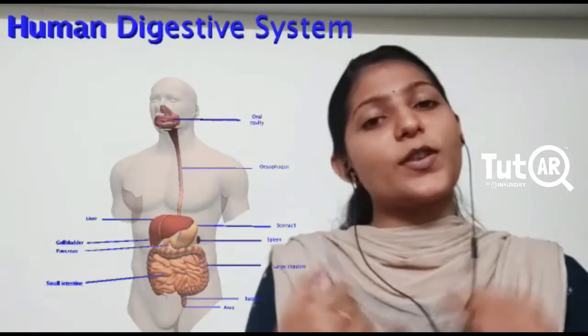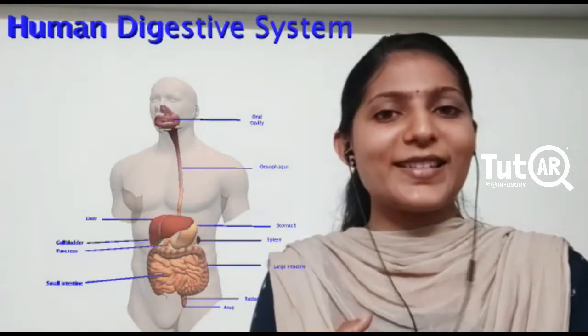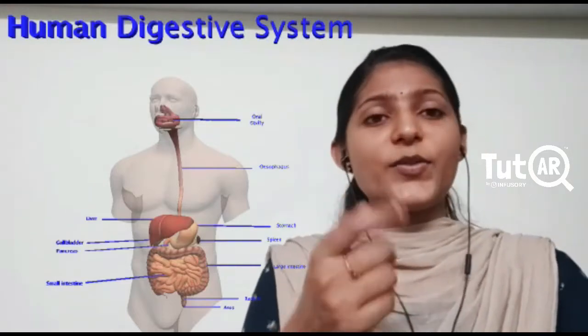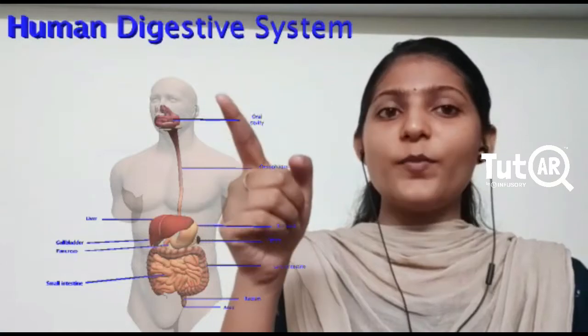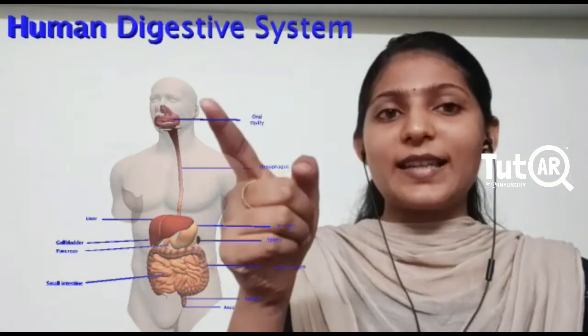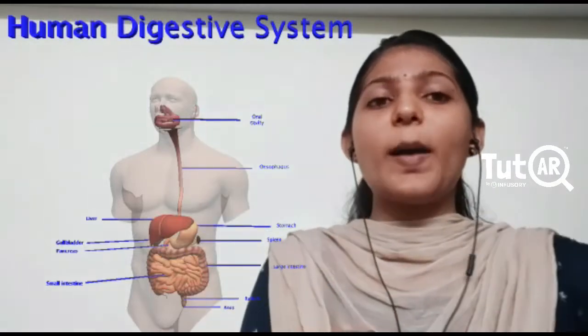Now for this process of digestion to take place, we need a system called as the digestive system. What are the parts involved in the digestive system? As you see in the picture here, we are having the digestive system which is called as the alimentary canal. So as you see here, it starts from the mouth and ends till the anus.